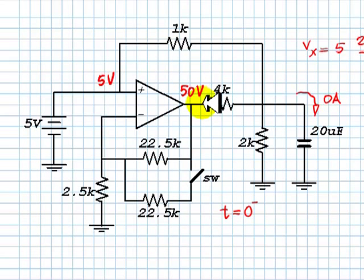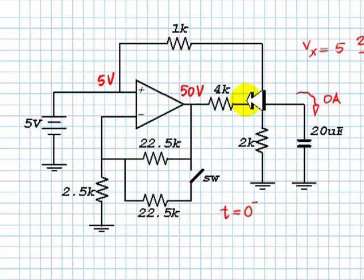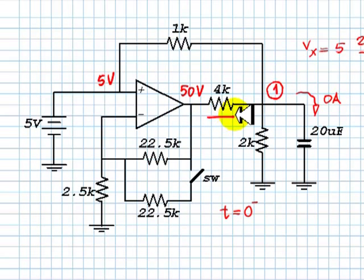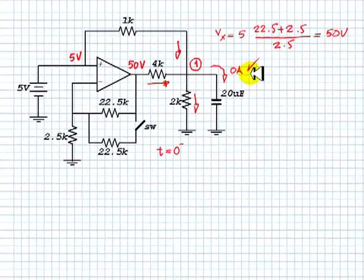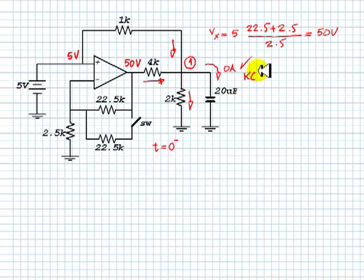Now, I know that the voltage at this node is 50 volts, because we are neglecting saturation. The voltage here is 5 volts. We can write easily a KCL equation for this node, node number 1. This current plus this current equals this one plus zero — KCL equation for node number 1.